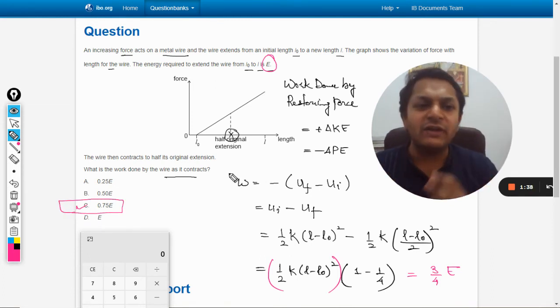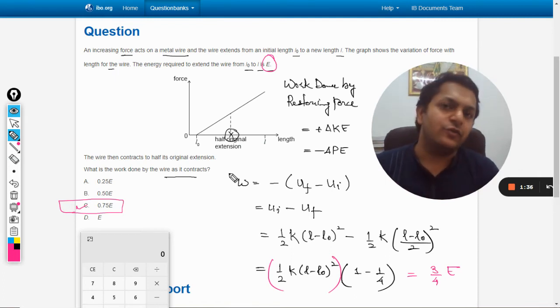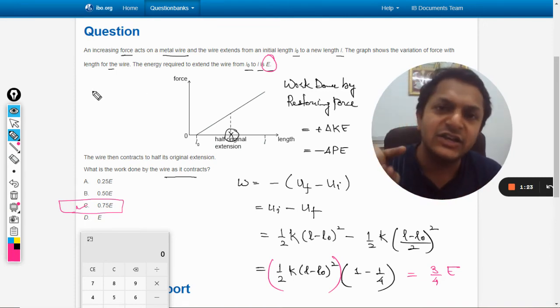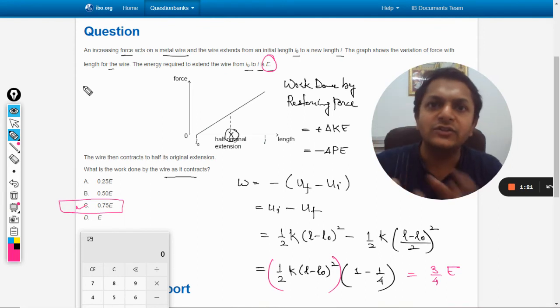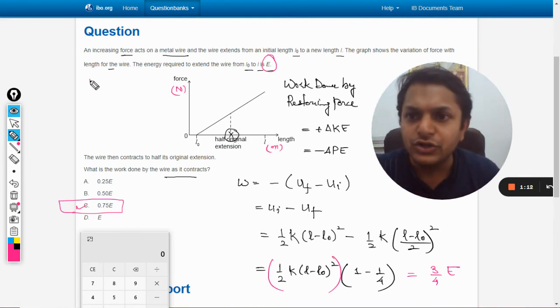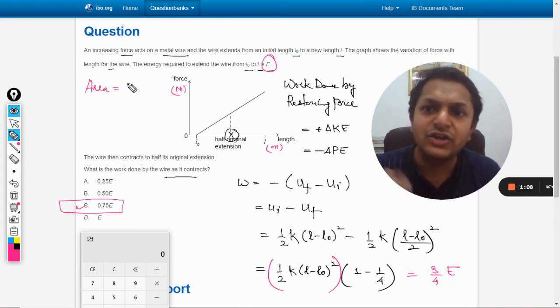Also at this point, I want to add one thing more. In such questions where the graph is given to you, you need not solve this much longer. Many times you won't be required. Why? Because you have to always see the SI unit of the physical quantities on the y-axis and x-axis. This is force—Newton—and this is length—meter. Clearly we are coming to this conclusion that the area under the curve will be having a unit Newton meter, which is basically same as joule.